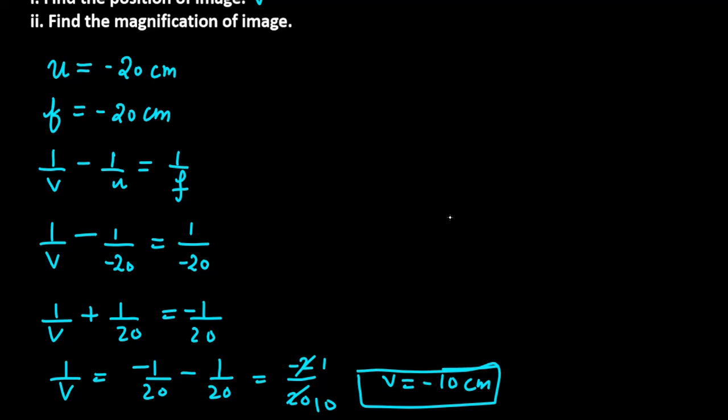Now, what is the magnification? Magnification depends on v and u. v is minus 10 and u is minus 20. So magnification is positive, positive half, or we can say positive 0.5.